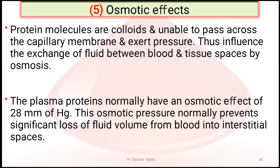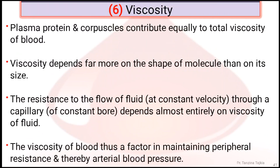Osmotic effect: protein molecules are colloids and unable to pass through the capillary membrane, so they exert osmotic pressure, influencing the exchange of fluid between blood and tissue space. Plasma protein normally exerts an osmotic effect of about 28 mmHg, which prevents significant loss of fluid from blood to interstitial space. Viscosity: plasma proteins and blood corpuscles contribute equally to total blood viscosity, which depends more on the shape of the molecule than its size. Viscosity is a factor in the maintenance of peripheral resistance and thereby arterial blood pressure.